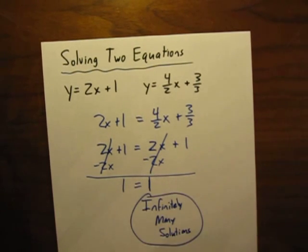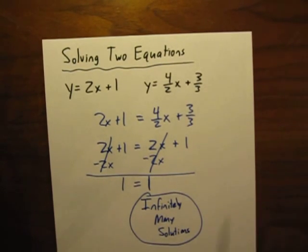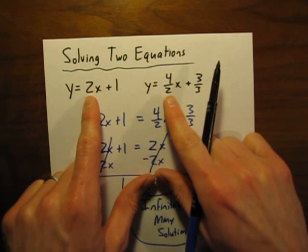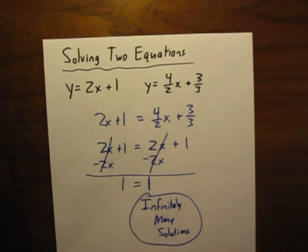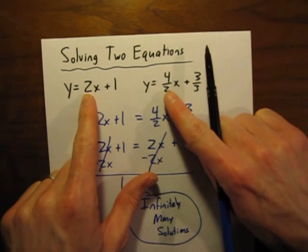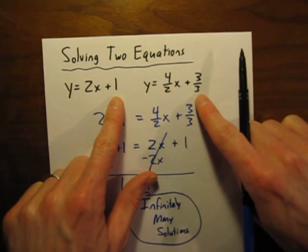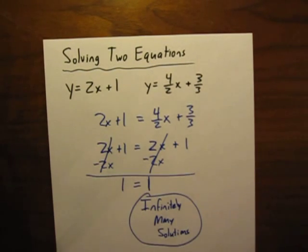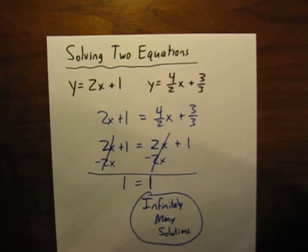That is our answer to this problem. Infinitely many solutions. Two special cases. One where the lines are the same, infinitely many solutions. The other special case was shown in a different video where the lines actually have the same slope. They're parallel but different y-intercepts. In that case, there was no solution. But in this case, infinitely many solutions. So hopefully you'll remember that next time you see that in one of your homework problems.